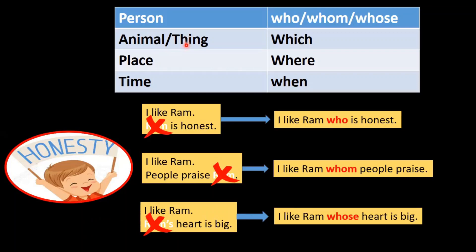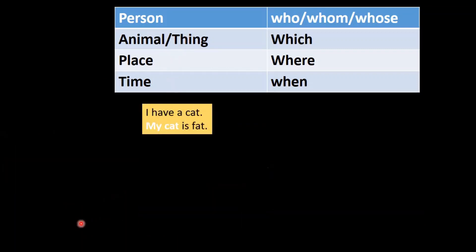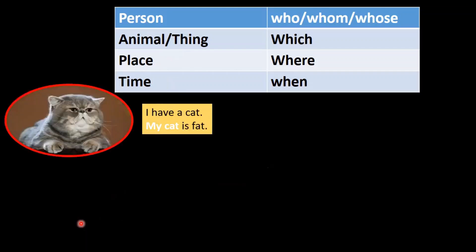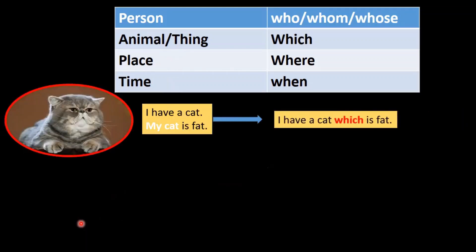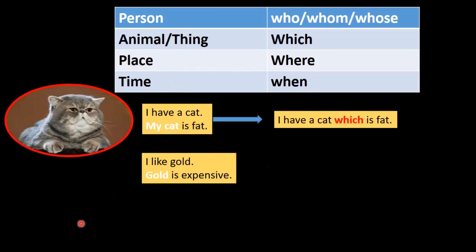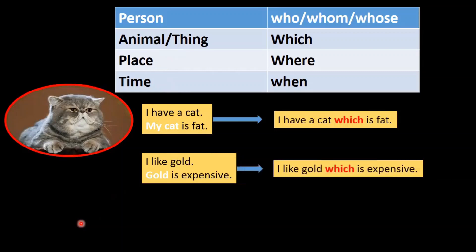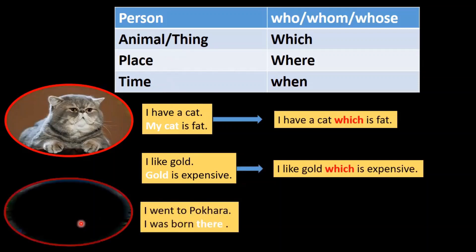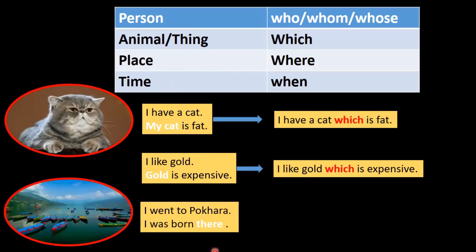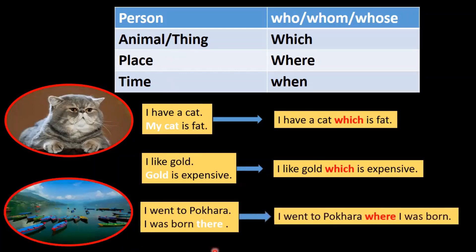What about animal, place, and time? I have a cat. My cat is fat — it is animal, so simply use which. Answer: I have a cat which is fat. I like gold. Gold is expensive — object or thing, so which. Answer: I like gold which is expensive. I went to Pokhara. I was born there. Answer: I went to Pokhara where I was born. So which replaces 'my cat' and 'gold,' and where replaces the place word 'there.'